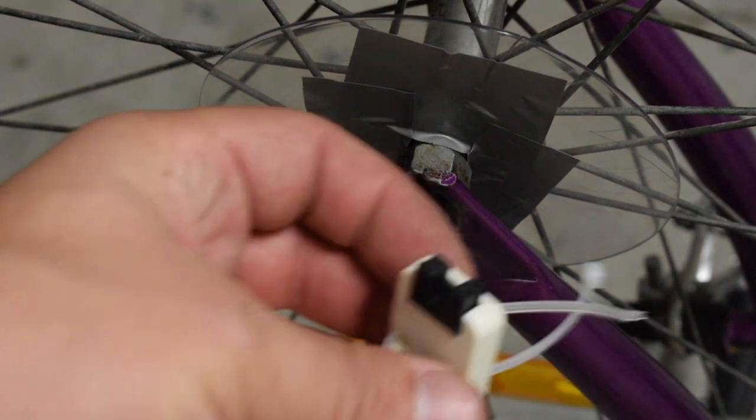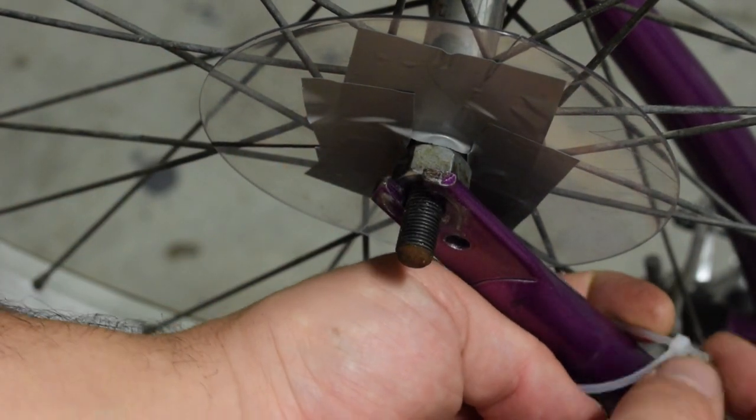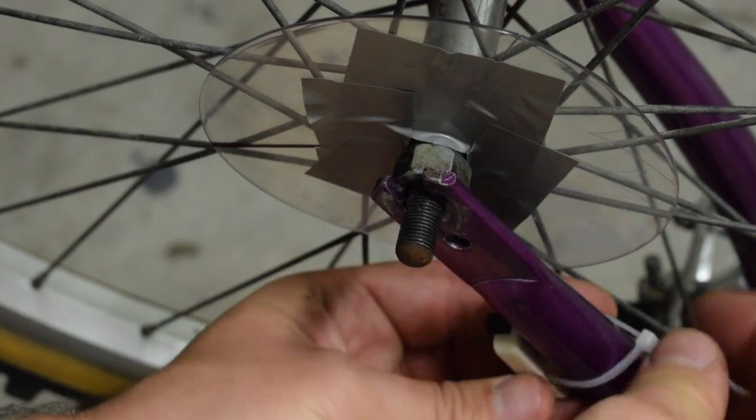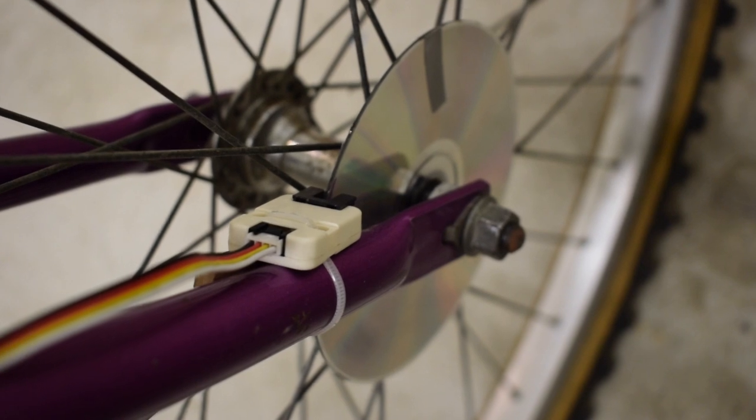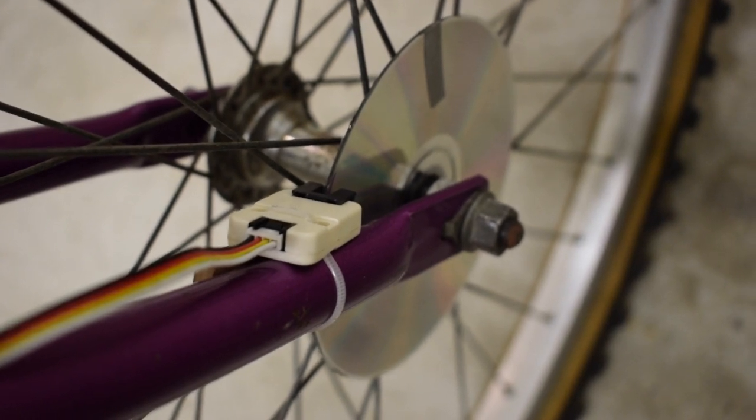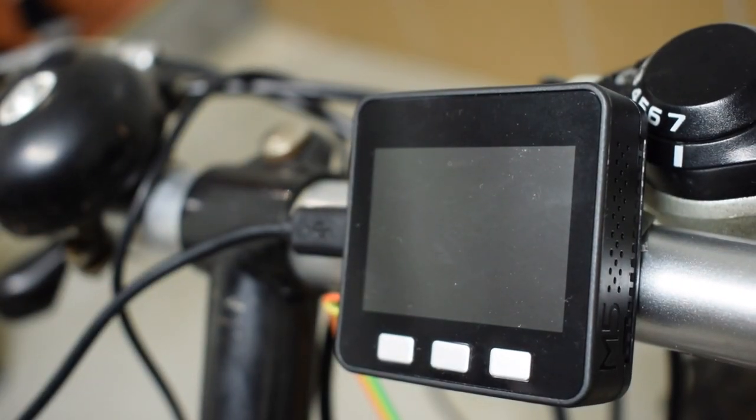Attach the OP180 sensor securely to the fork of your bike. Then make sure the disc can pass freely through the gap in the sensor. Once you've secured everything including the M5 stack device to the handlebars you can also secure a power bank to charge the M5 stack on longer journeys.